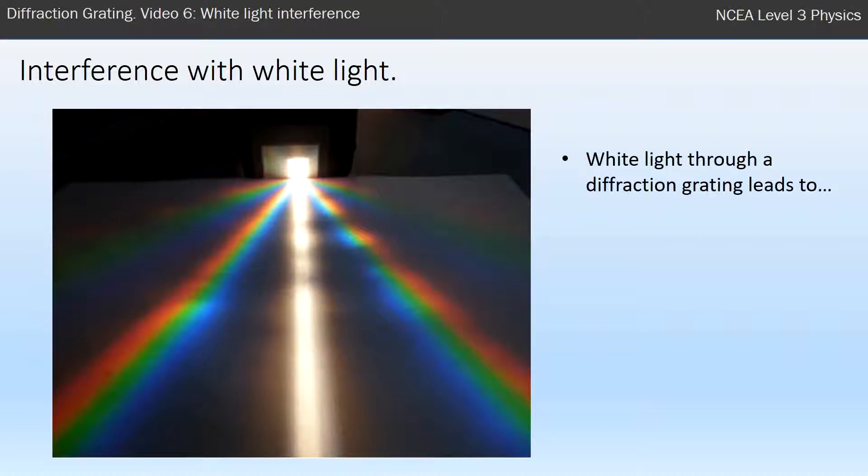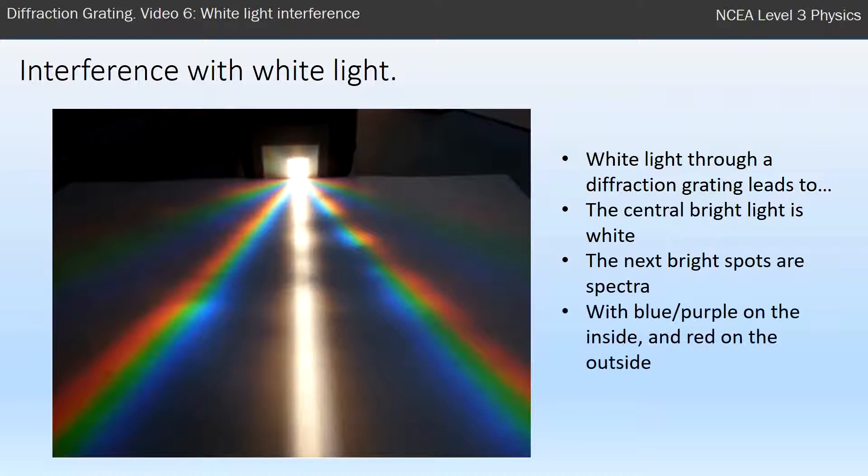What do you get? Well, you get the central bright spot, as you can clearly see, is white, and then the next bright spots are spectra or rainbows. And you've got purple or blue on the inside of those rainbows and you've got red on the outside.